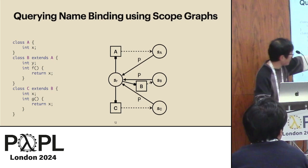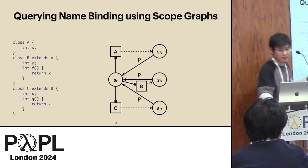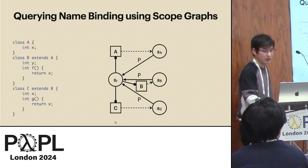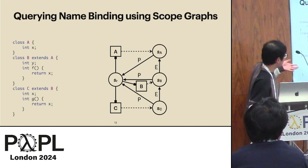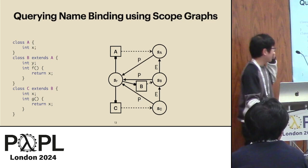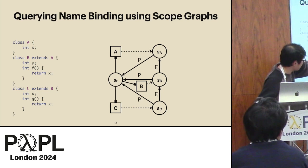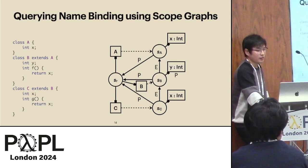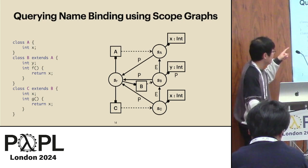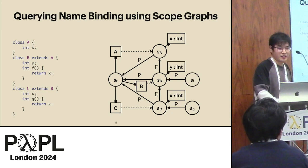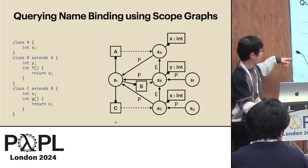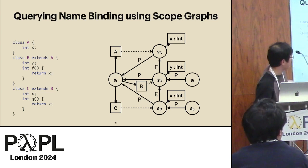These class scopes are connected to the root scope via scope parent edges, labeled P. In this way, declarations in the root scope are reachable from class scopes. If a class extends another class, there is an extend edge from the extending class to the extended class — for instance, class B extends class A, so there is an edge from scope B to scope A, labeled E. Class scopes have declarations for fields and methods. Each method also has its own scope: method F has scope SF, and method G has scope SG.